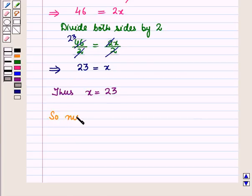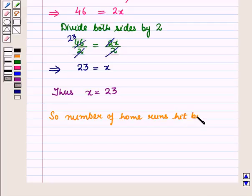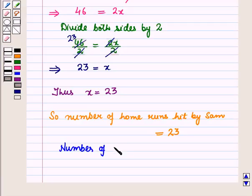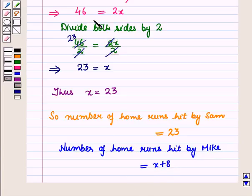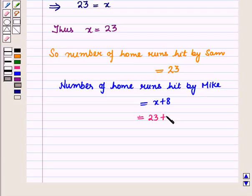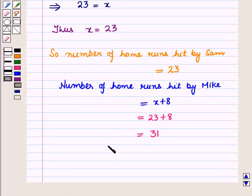So X is equal to 23. Therefore, the number of home runs hit by Sam is equal to X, which is 23. And the number of home runs hit by Mike is equal to X plus 8, which is equal to 23 plus 8, so the number of home runs hit by Mike is equal to 31. And this is the solution of the given question. That's all for this session. Hope you all have enjoyed the session. Thank you.